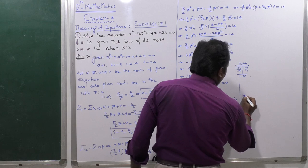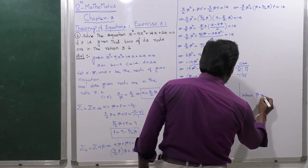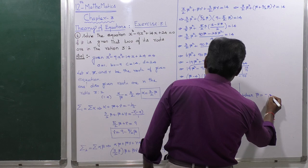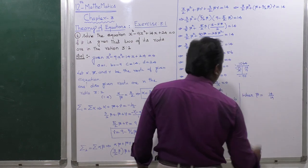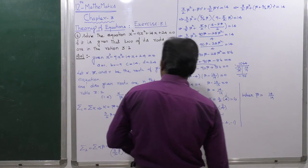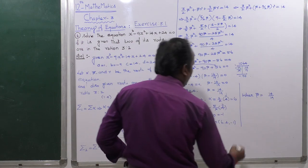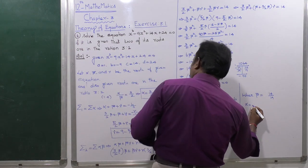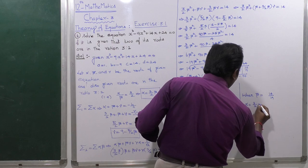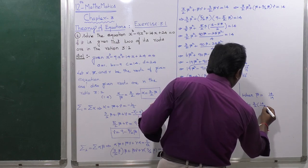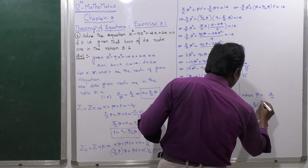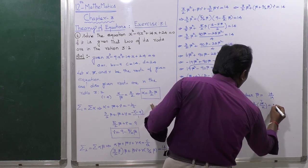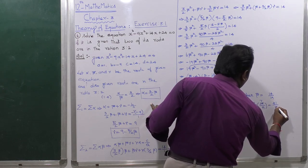When β = 14/19: α = (3/2) × (14/19) = 42/38 = 21/19. Next, find γ using γ = 9 - (5/2) × (14/19).